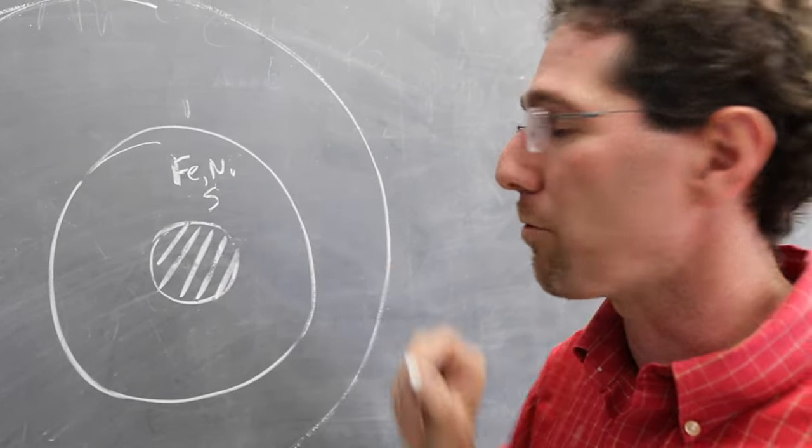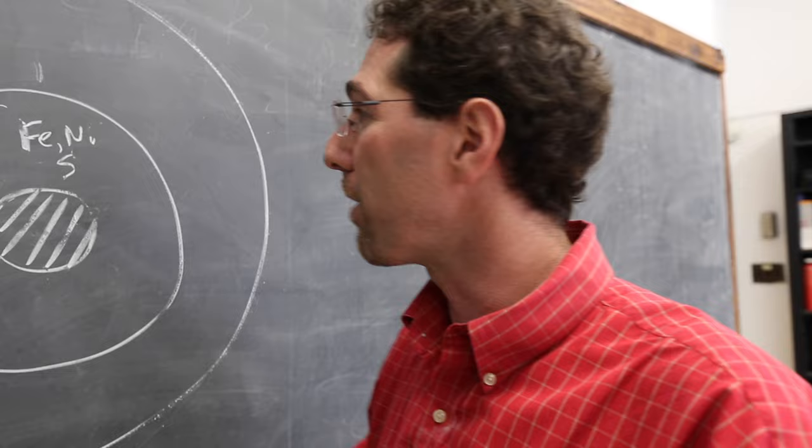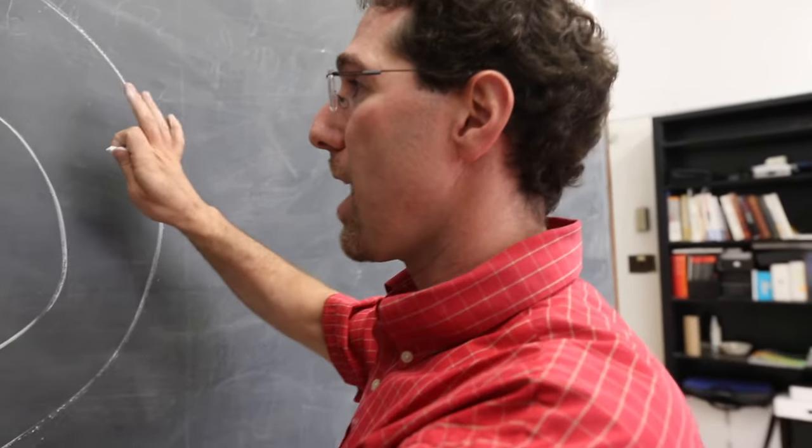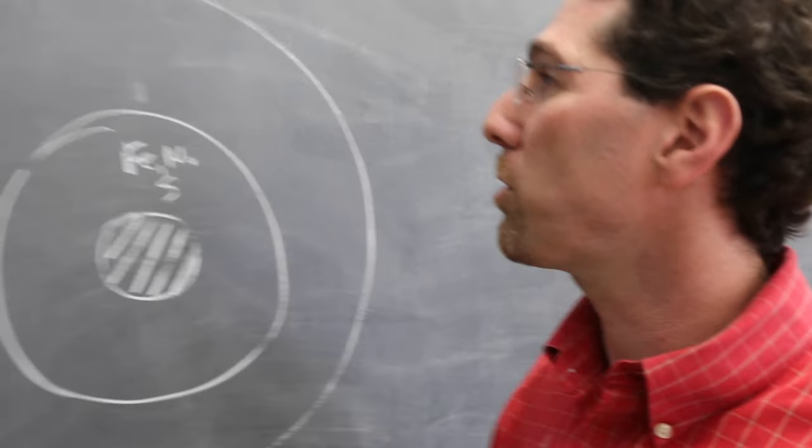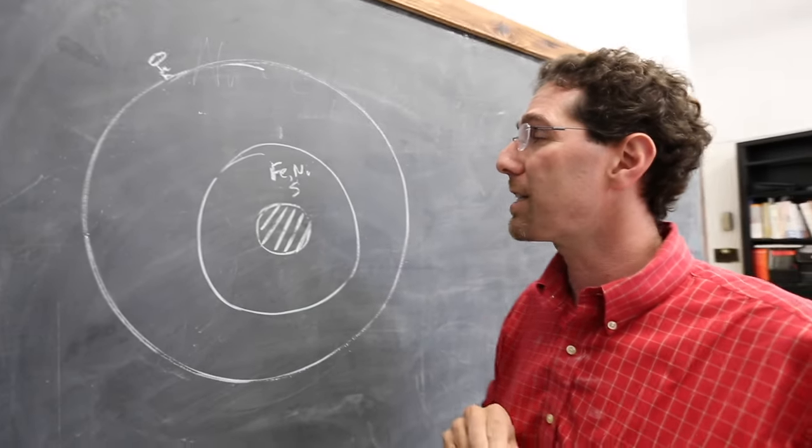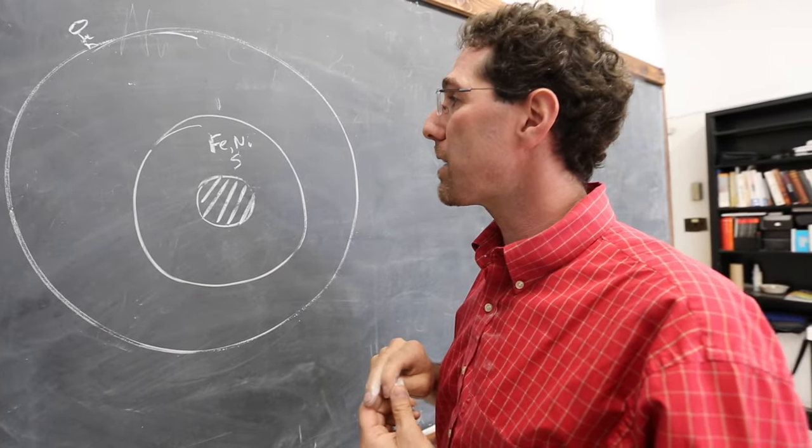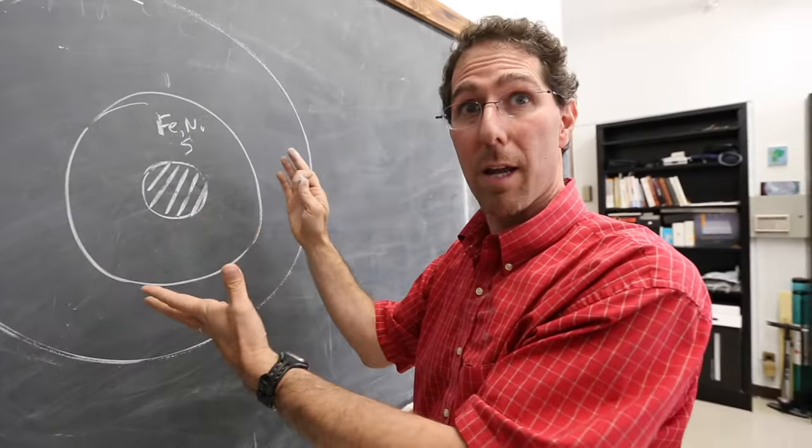It's all predominantly iron with some nickel and some other stuff. Let's say it's mainly iron, nickel, and sulfur. We've got, for the most part, solid silicate in what's called the mantle. And this core is about the size of Mars. It's big. It's the size of other planets.